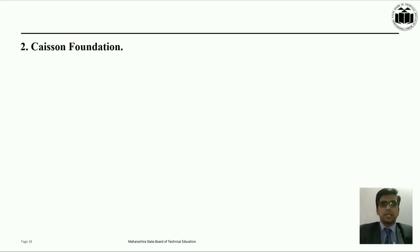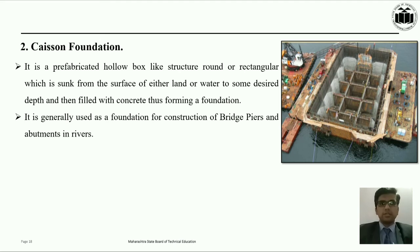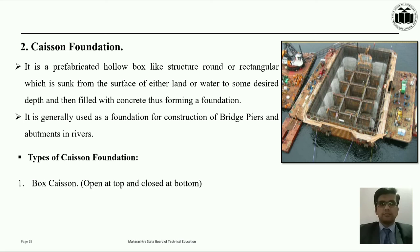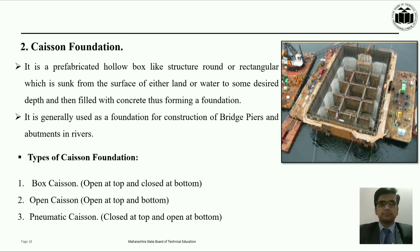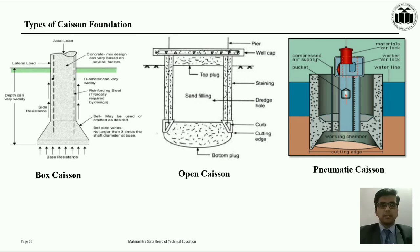The second type of deep foundation is caisson foundation. A caisson foundation is a prefabricated hollow box-like structure, round or rectangular, which is sunk from the surface of either land or water to some desired depth and then filled with concrete, thus forming a foundation. It is generally used as a foundation for construction of bridge piers and abutments in rivers and other water bodies. The caisson foundation can be further classified as box caisson, open caisson, and pneumatic caisson. Box caisson is generally open at the top and closed at the bottom. Open caisson is open at both the top and bottom, and pneumatic caisson is closed at the top and open at the bottom.